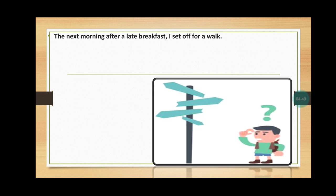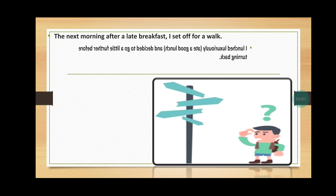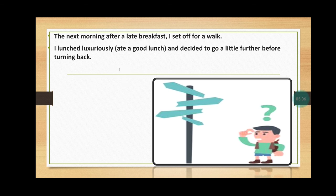The next morning after a late breakfast, I set off for a walk. Usually whenever we eat properly, we want to go for a walk. In the morning when he had his heavy breakfast, he wanted to go for a walk. "I lunched luxuriously" - when you eat a good lunch, that is known as lunching luxuriously - "and decided to go a little further before turning back. When I found I had come far away, I lost my way." When you go to a new place, you can lose your way.